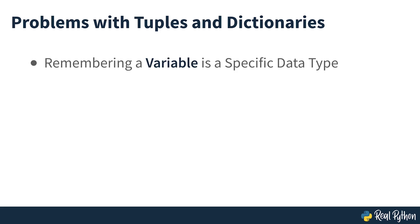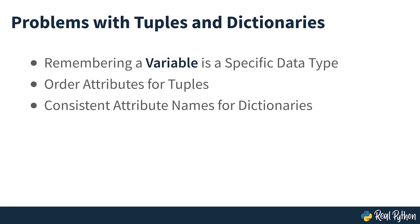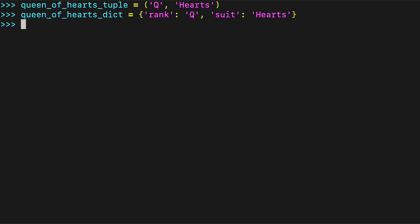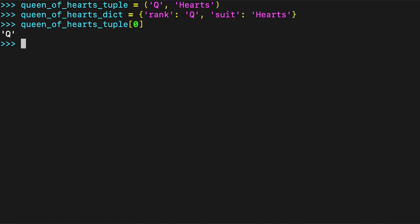You need to remember that the Queen of Hearts variable represents a card. For the tuple version, you need to remember the order of attributes. Writing spades A will mess up your program, but probably not give you an easily understandable error message. If you use the dict version, you must make sure the names of the attributes are consistent. Furthermore, using these structures is not ideal. The tuple does not give us named access, and the dict version doesn't give named attribute lookup.